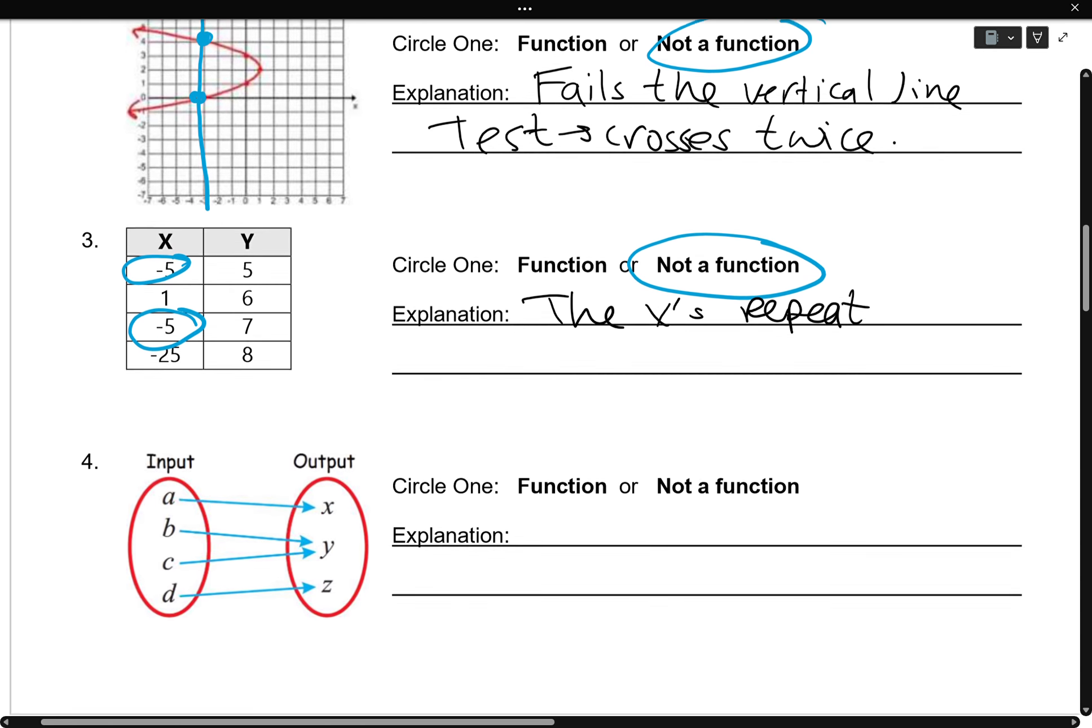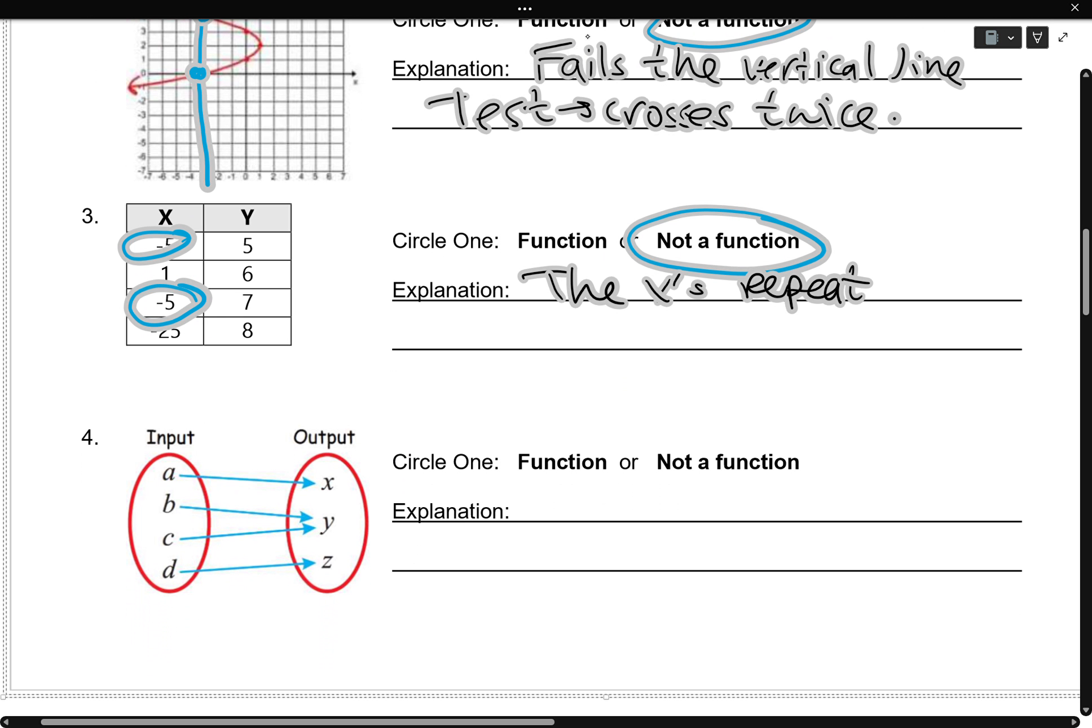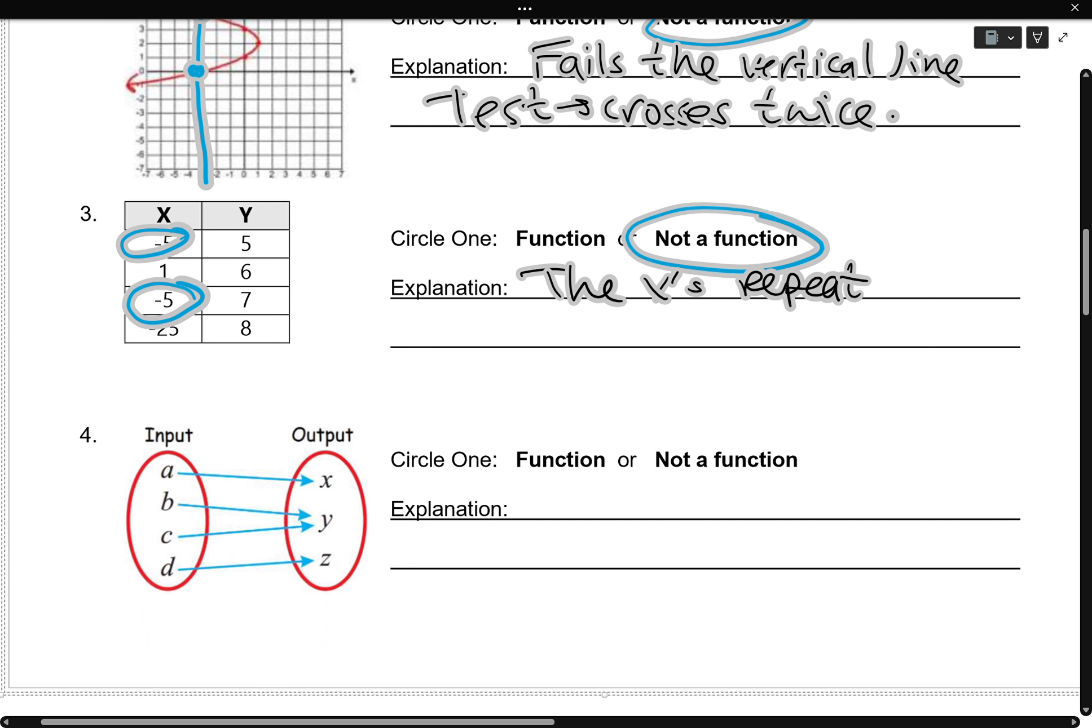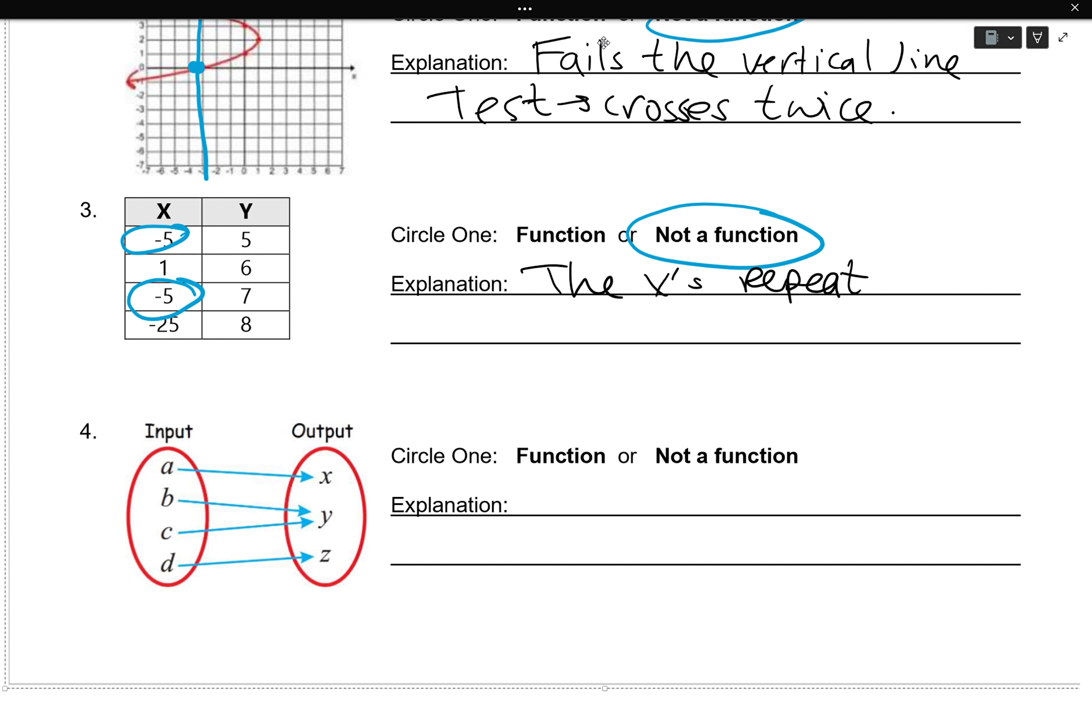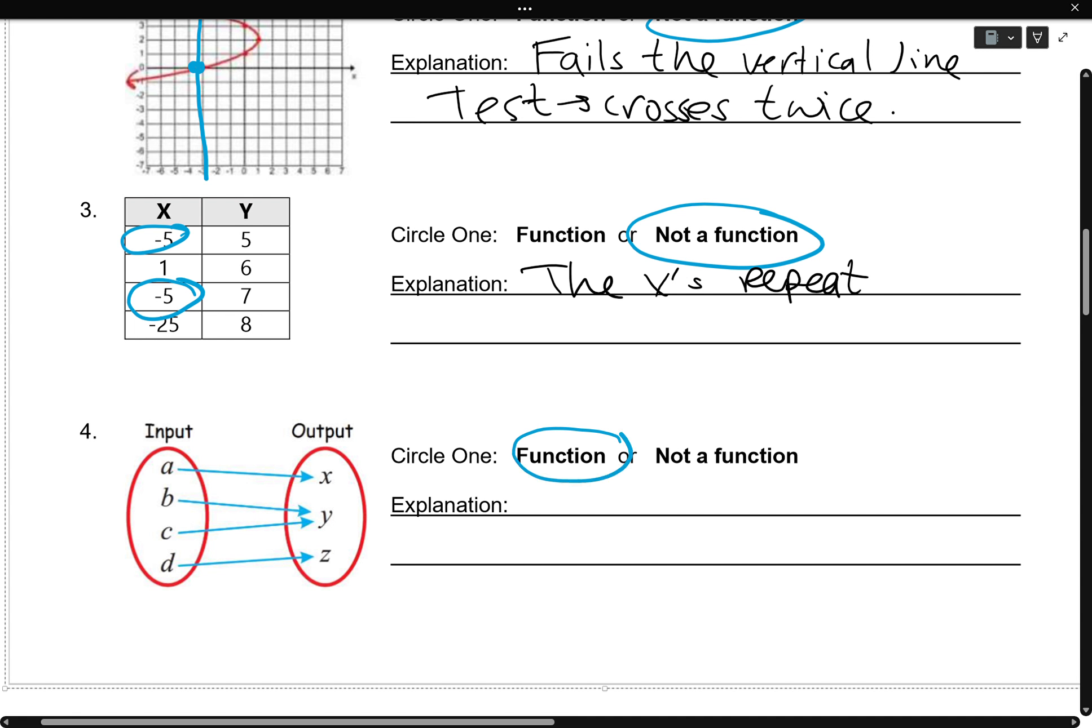Lastly, let's take a look at number 4. For maps, that's what number 4 is. For those kind of problems, we want to make sure only one arrow is leaving every input. Looks like that's happening. So it's a function. So, only one arrow leaves each input. Perfect.